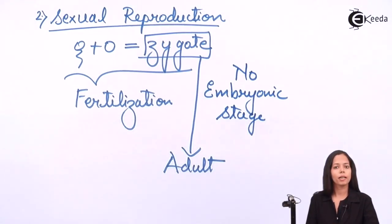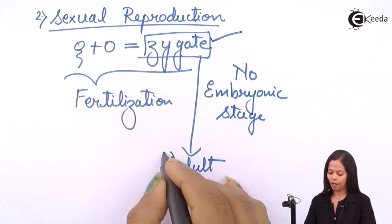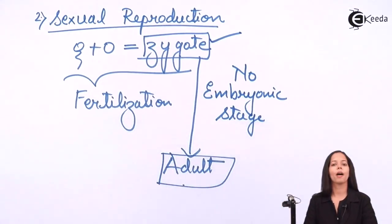The question arises: why is there no embryonic stage in protista? The answer is, the organism is a single cell. Once the single cell is formed, this itself is an adult. That is why it is said embryonic stage is absent in protista.